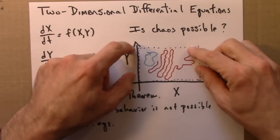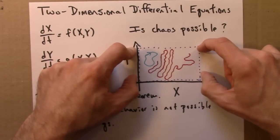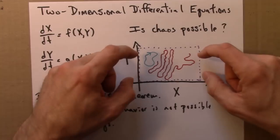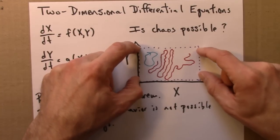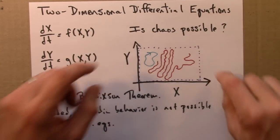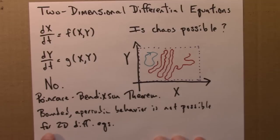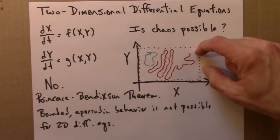Which says bounded aperiodic behavior is not possible for 2D differential equations of this form.